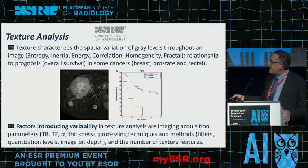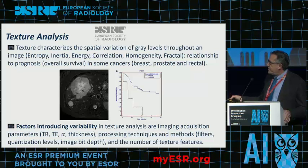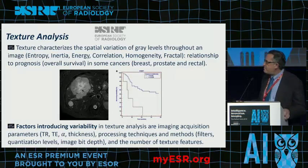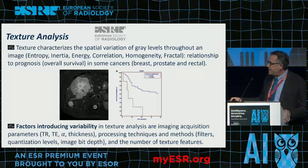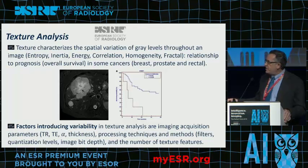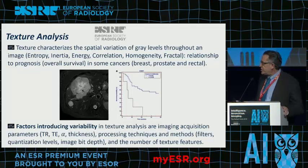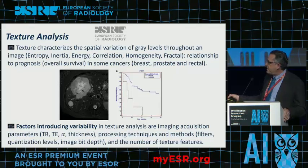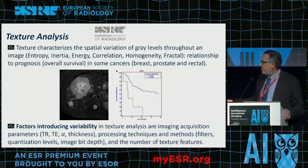The bad thing is that there is huge variability in what we are doing, mainly related to acquisition parameters. If we change the repetition time, echo time, flip angle, slice thickness, or sequence, the parameters will change. The processing techniques and methods, the filters being used, the quantification levels, and the depth of the image will all change the results. The number and type of features extracted also add variability. So variability is enormous.